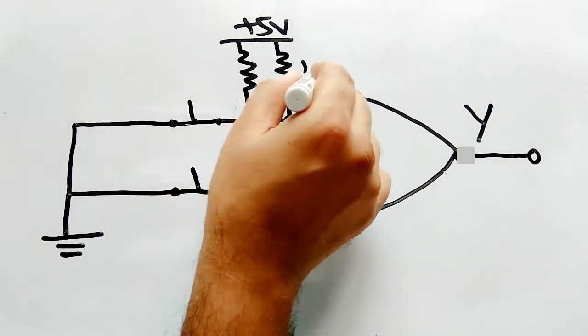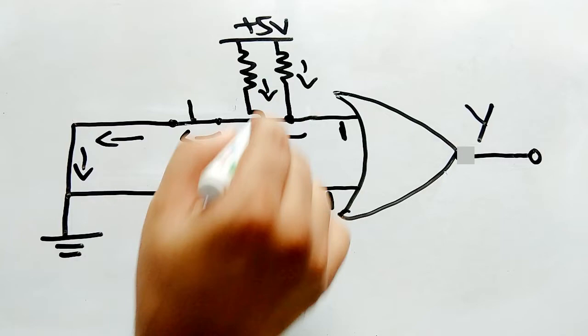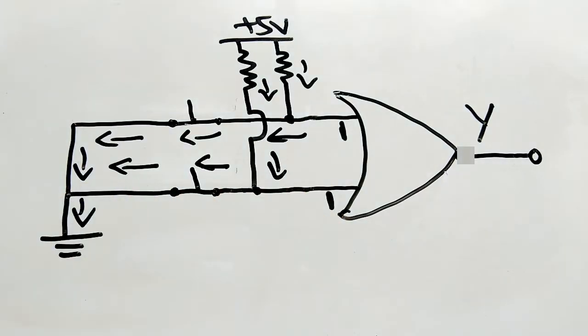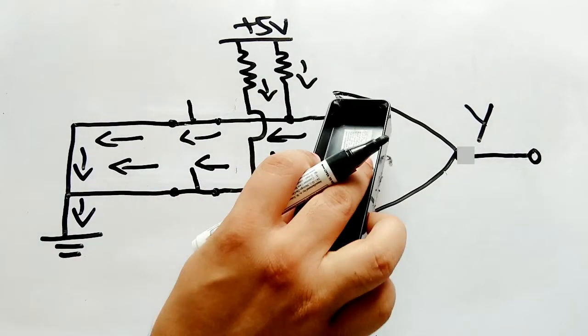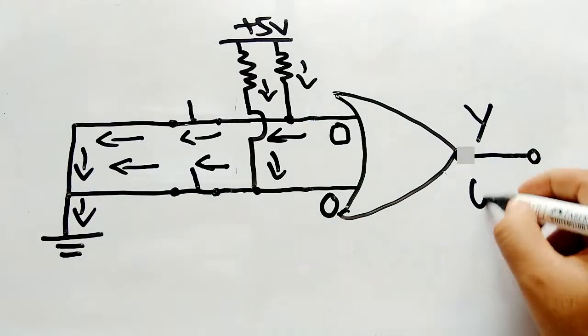When the switch is pressed, the current flows through the resistor to the ground, feeding 0 in both inputs, thus making our OR gate work as desired.